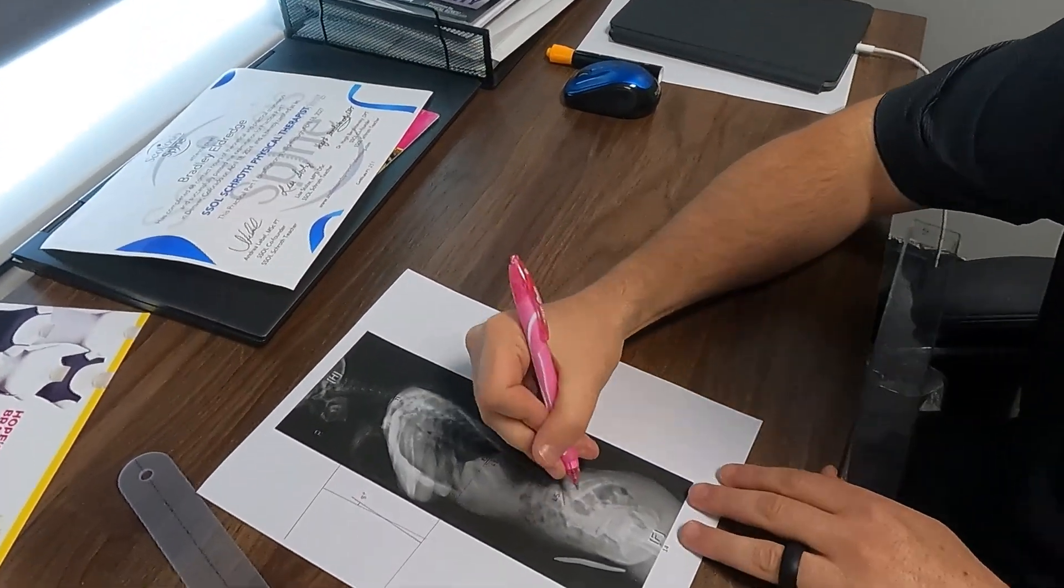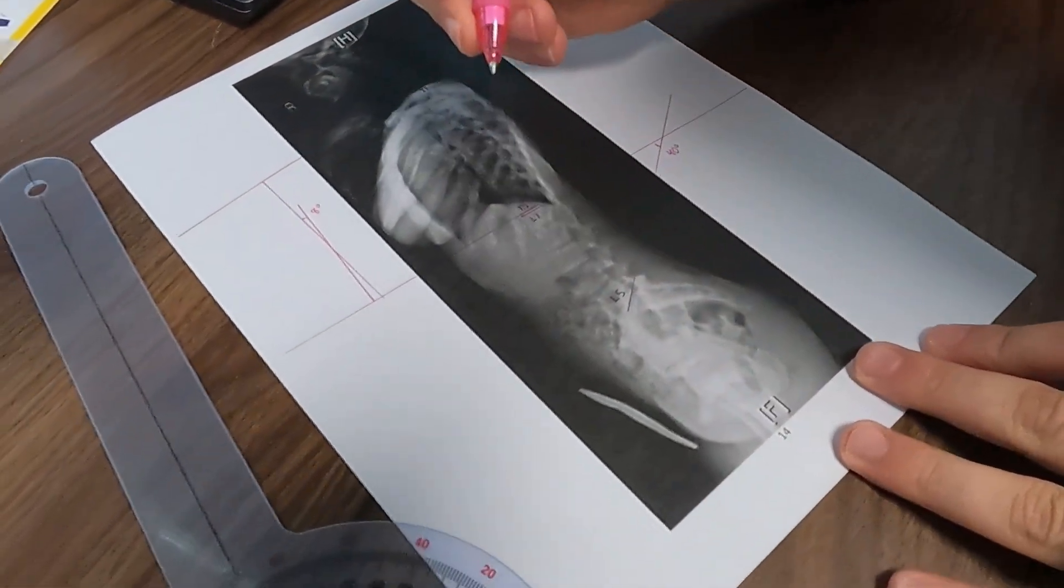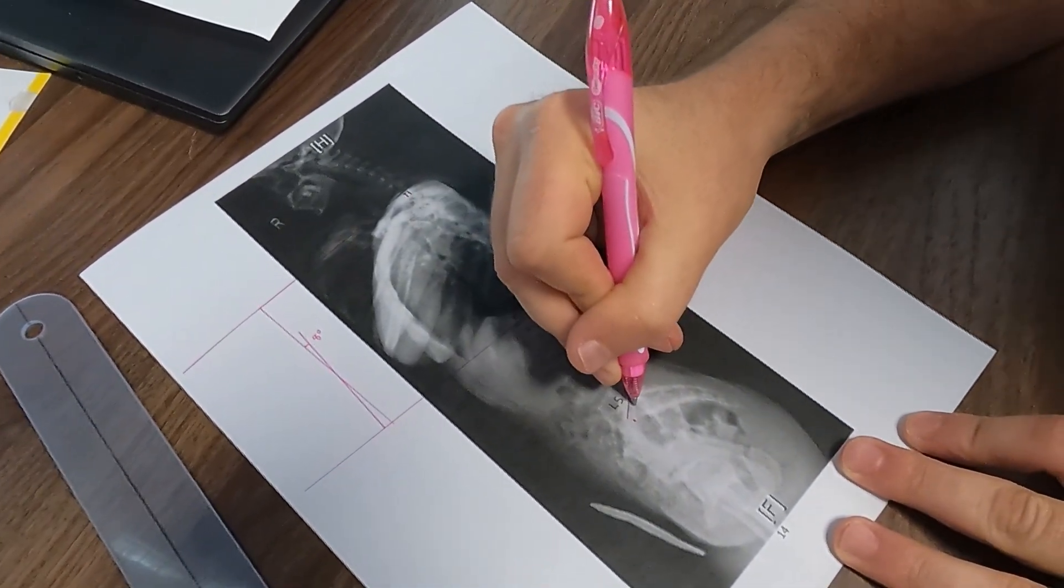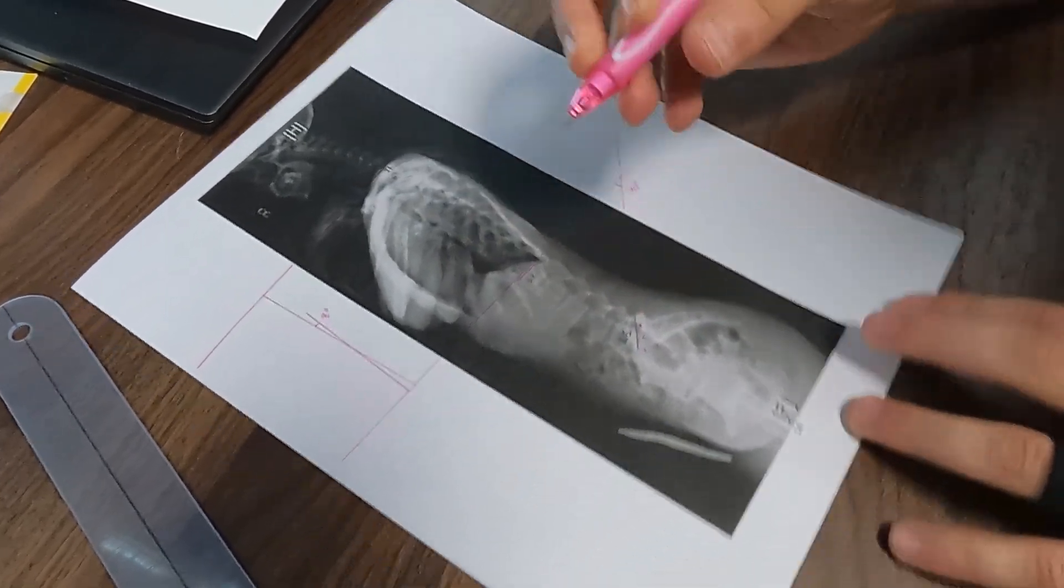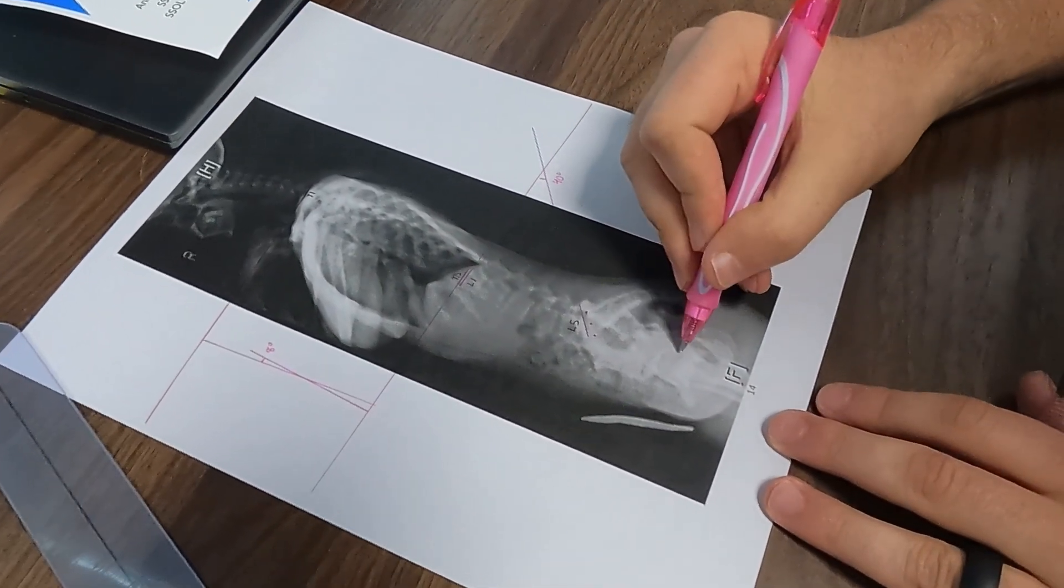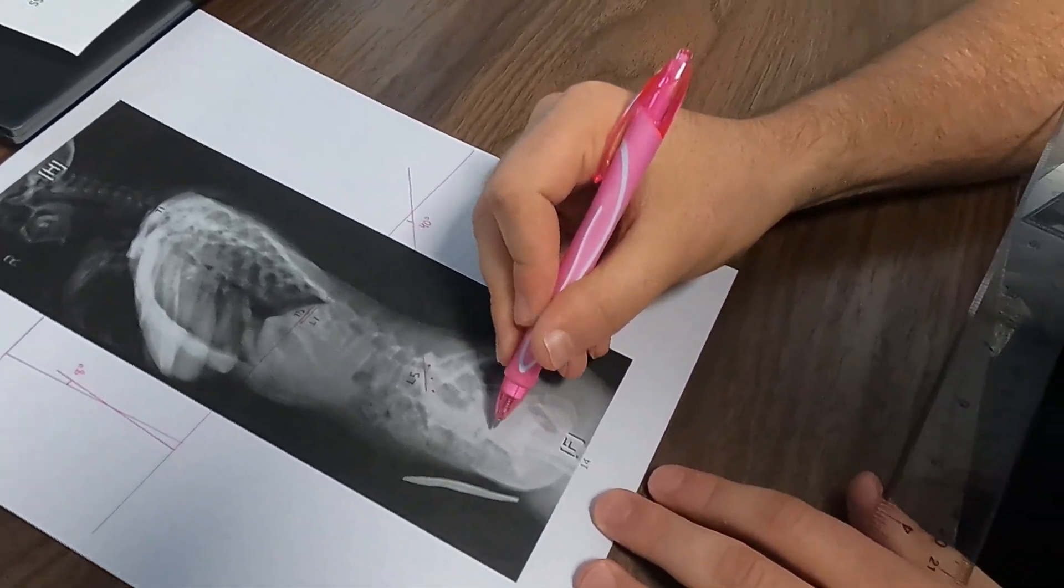We're going to find the base of the sacrum. So on this picture, I'm going to draw kind of the front and the back. We want to go in the center of that. Once we find the center, the next thing that we're going to do is come down here, look at the femoral heads...